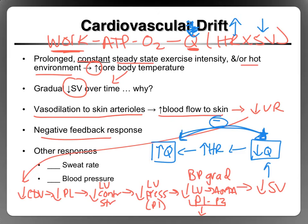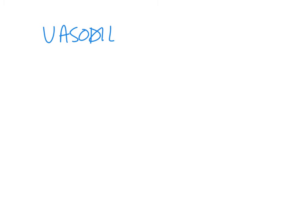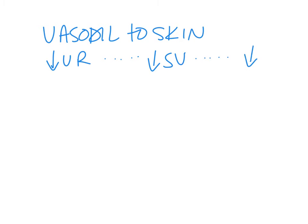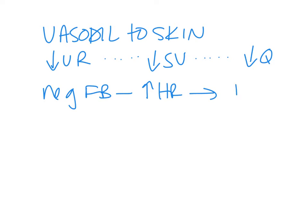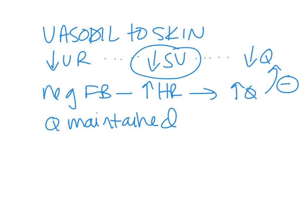So in cardiovascular drift, cardiac output is maintained. Basically, we get vasodilation to the skin, which causes a reduction in venous return, which causes a reduction in stroke volume, which causes a reduction in cardiac output. This triggers a negative feedback where heart rate increases so that cardiac output can come back up to where it needs to be. So cardiac output over time is maintained. We have a reduction in stroke volume and cardiac output being maintained.